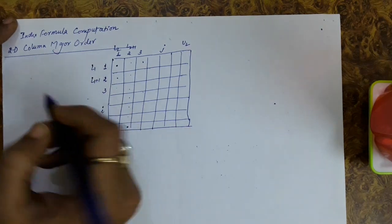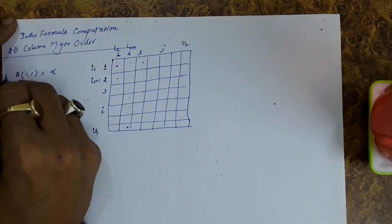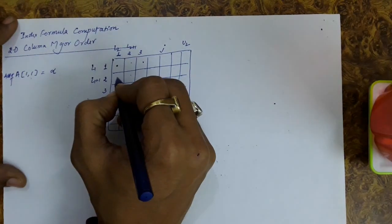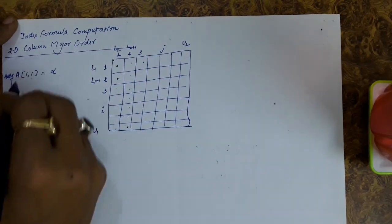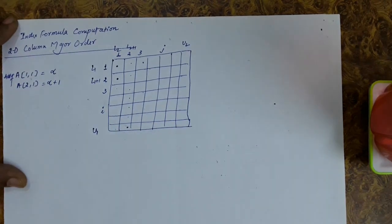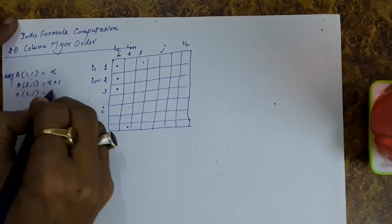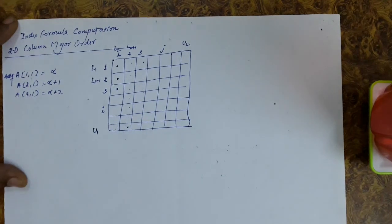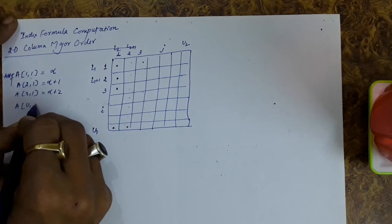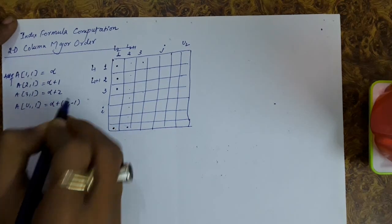The address of the first element is alpha. The address of a21 is alpha+1. The address of a31 is alpha+2. So the address of a(u1,1) will be alpha + u1 - 1. You can see: if the row index is 3, the offset is +2; if it is 2, the offset is +1; and if it is u1, the offset is u1-1.